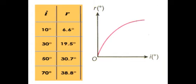A graph of angle of refraction, R, against angle of incidence, I, shows that when the angle of incidence increases, the angle of refraction increases too. As a conclusion, the greater the angle of incidence, I, the bigger the angle of refraction, R.